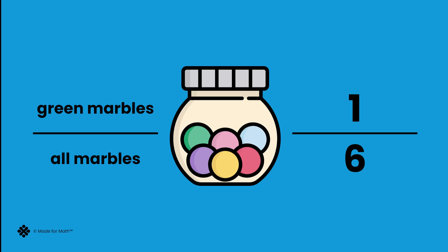Numerators can refer to various units. In this example, the green marbles is the numerator telling us how many marbles are green out of all of the marbles in the jar.